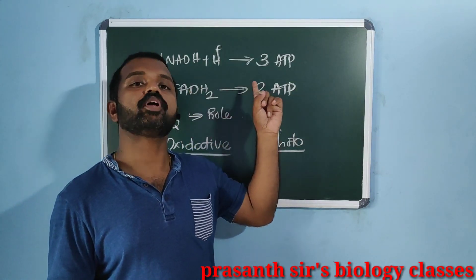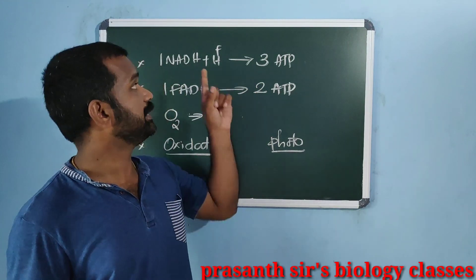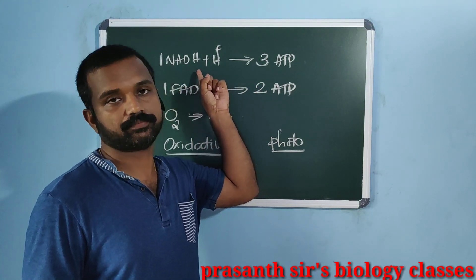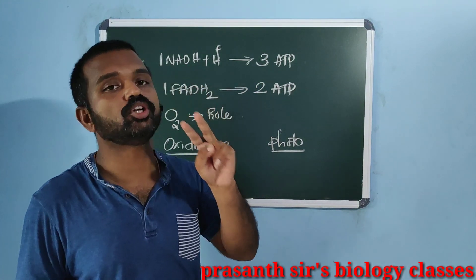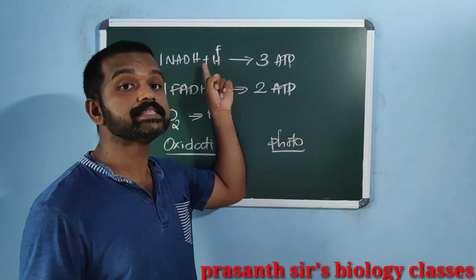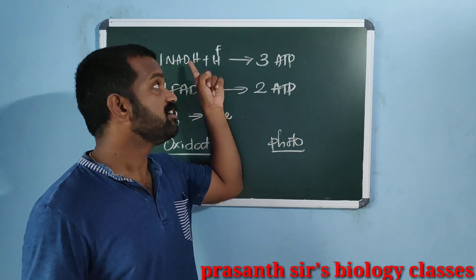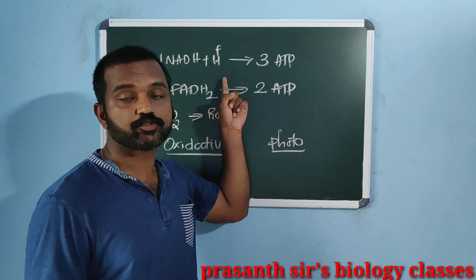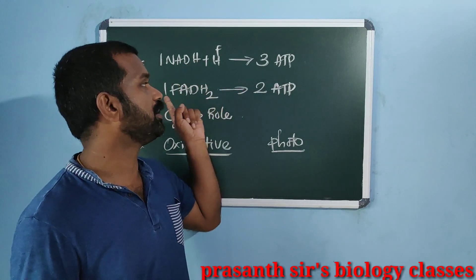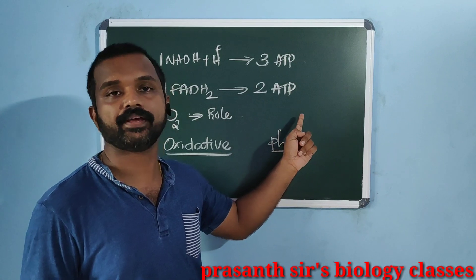The number of ATP molecules produced depends on the nature of the electron donor. The two electron donors here are NADH+H+ and FADH2. 1 NADH+H+ yields 3 ATP, and 1 FADH2 yields 2 ATP.